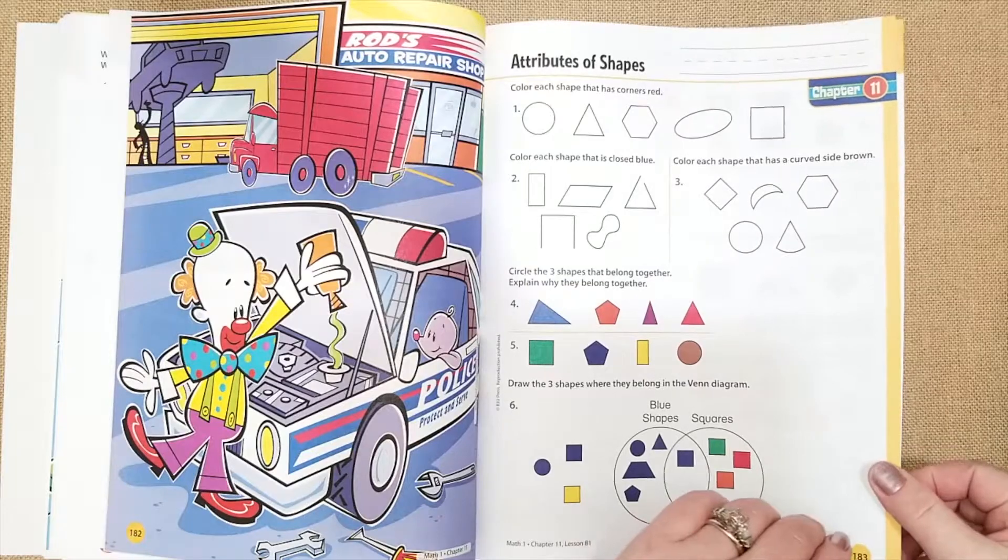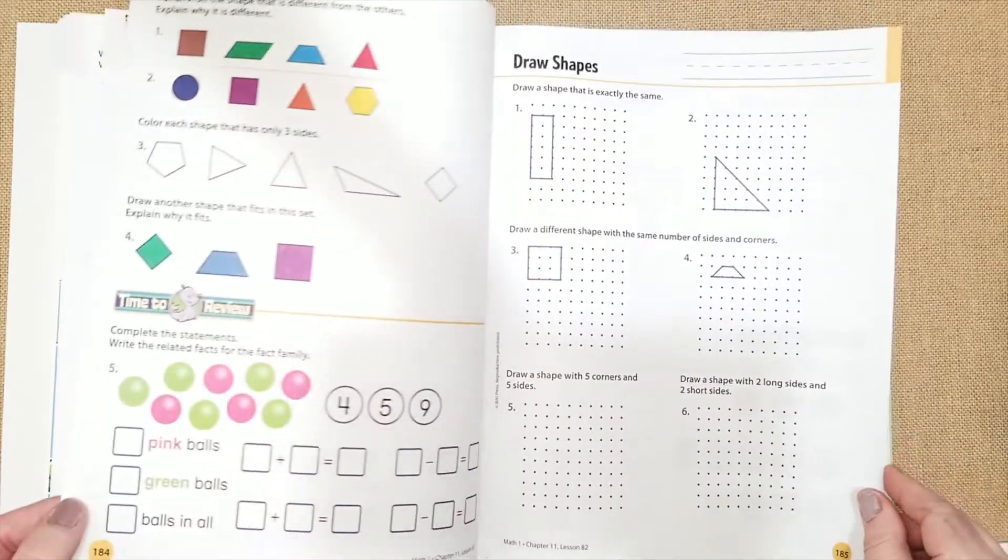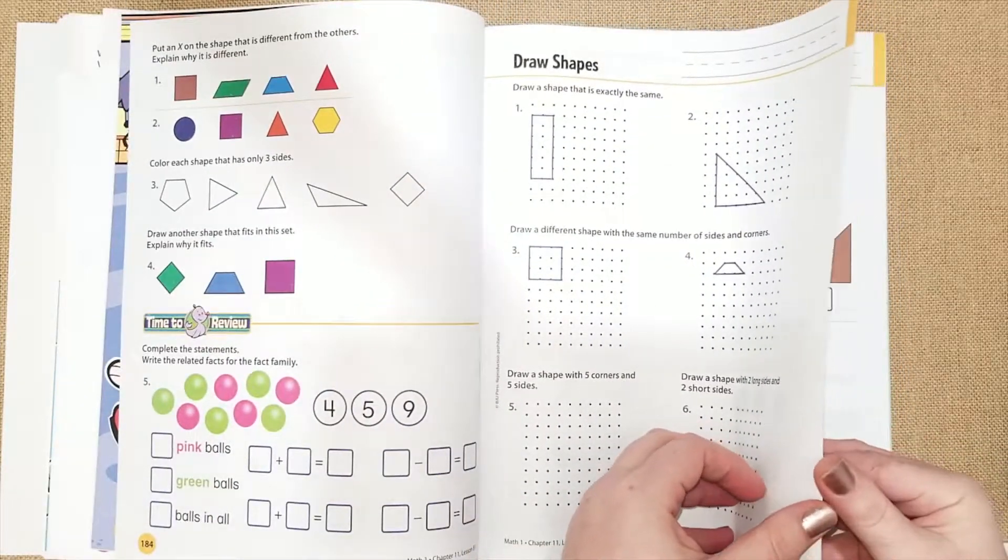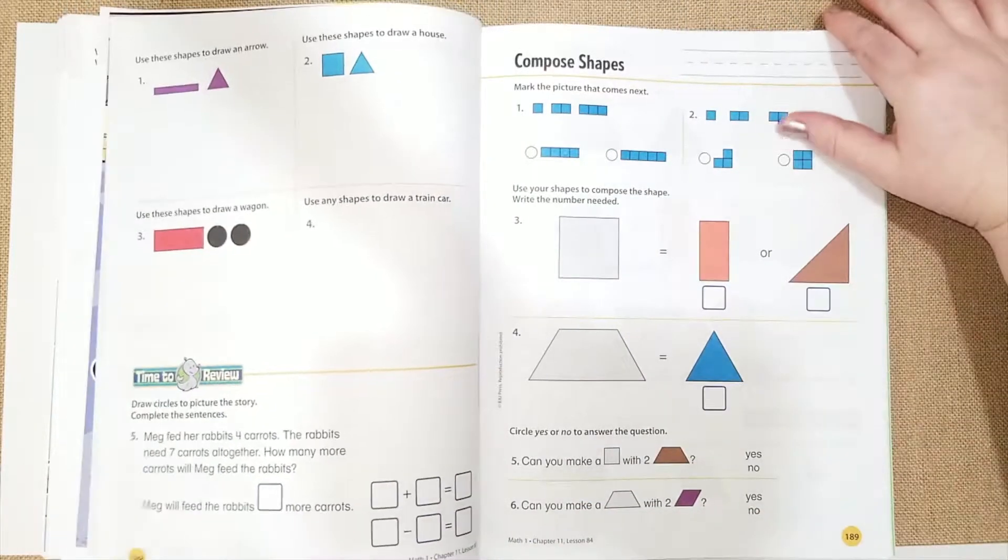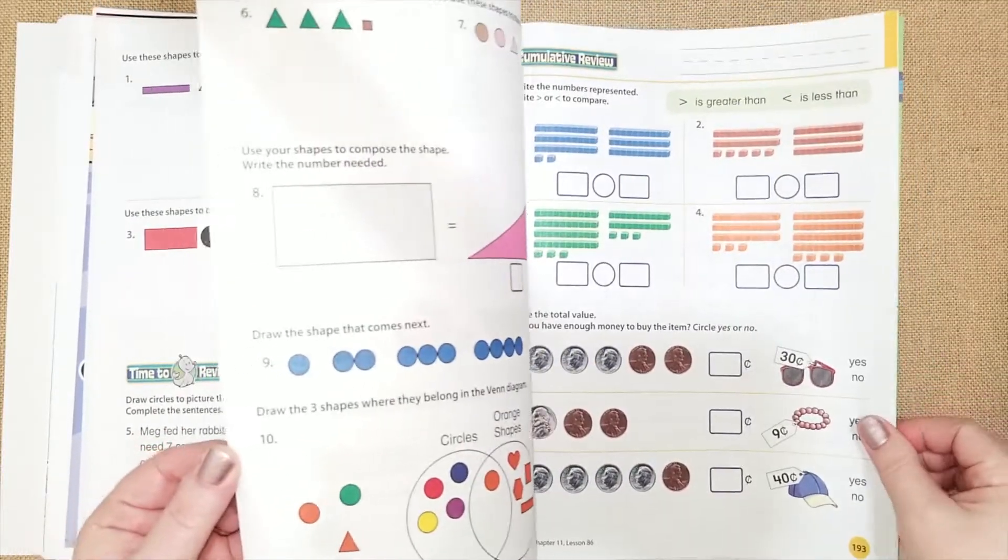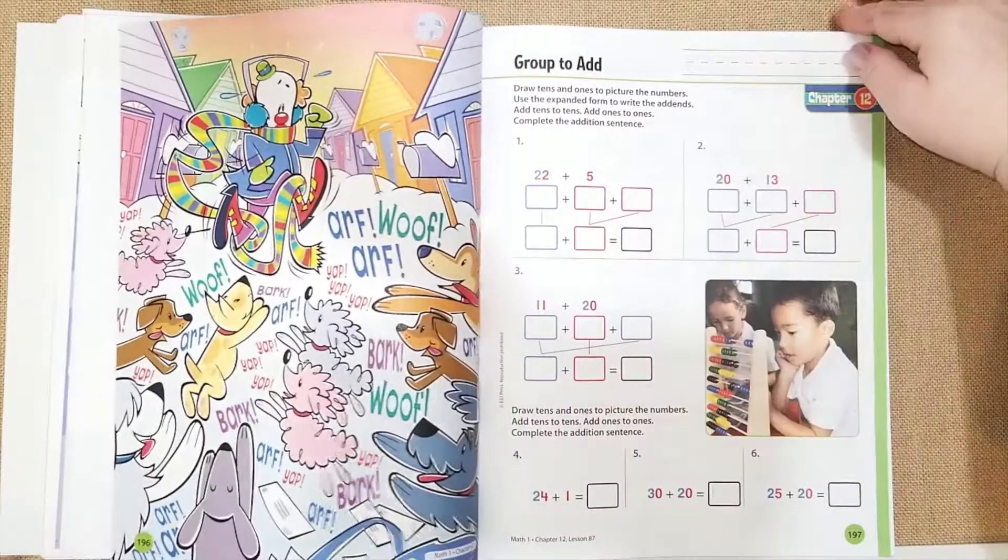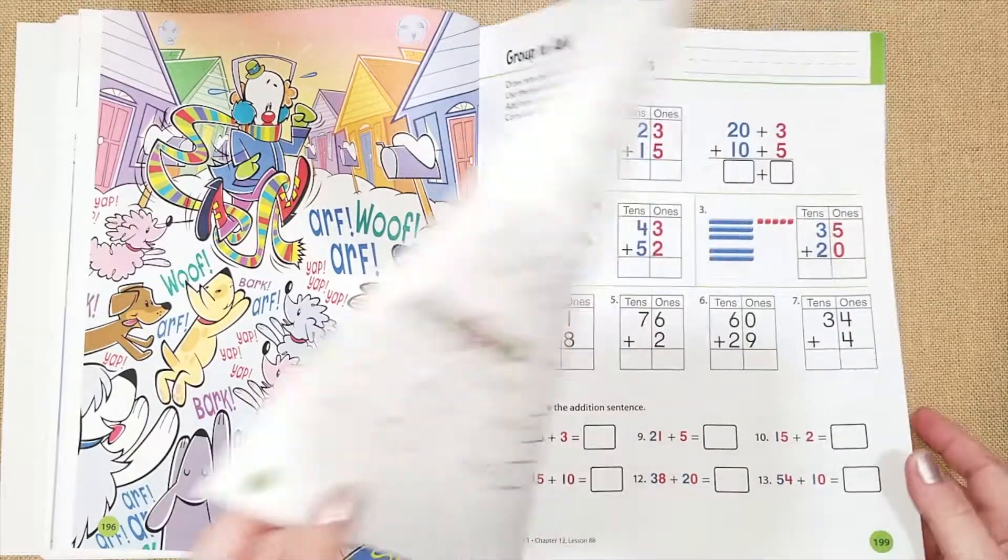Then they're going to be doing the attributes of shapes, drawing shapes. That will be fun. Composing shapes. For chapter 12, they're going to do group to add.